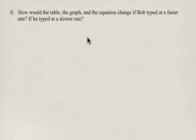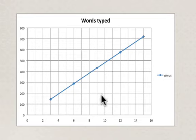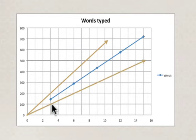And how would the table, the graph, and the equation change if Bob typed at a faster rate and if he typed at a slower rate? Well, if we put our graph up, and here's where he's typing 48 words per minute. Well, let's say he was able to type in 3 minutes 200 words. Then that would be a faster rate. So that would, and then if he was only able to type 100 words in 3 minutes. So here is where he types 3 minutes 100 words and where he types in 3 minutes 200 words. So here, the faster rate is the steeper graph. And the slower rate is the graph that is less steep.